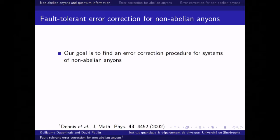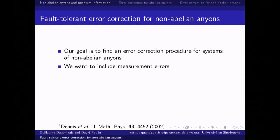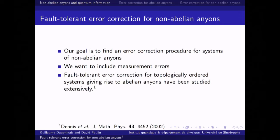Our goal is to find an error correction procedure for a system that gives rise to non-abelian anyons. There are a few papers that study this problem. However, none of them considered the possibility of having measurement errors. We want to include measurement errors since they will occur in real life, and this is quite a serious complication for non-abelian anyons. A good starting point is topologically ordered systems related to the toric code, which give rise to abelian anyons.